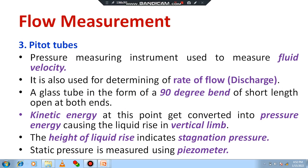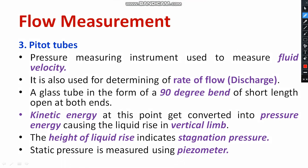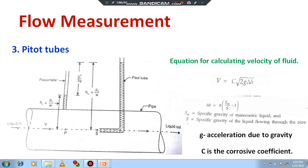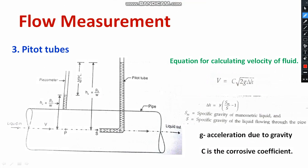Let's understand what a pitot tube is. It is a pressure measuring device — you can measure fluid velocity as well as calculate the discharge. The pitot tube is a glass tube in the form of a 90-degree bend of short length, open to both ends. As you can see, there is a movement of liquid from the left side (inlet) to the right side (outlet).